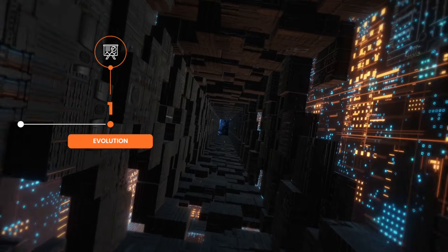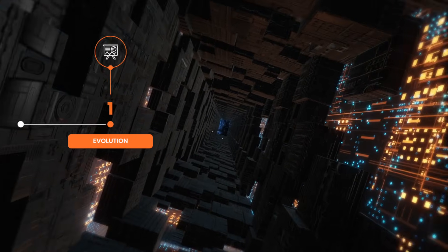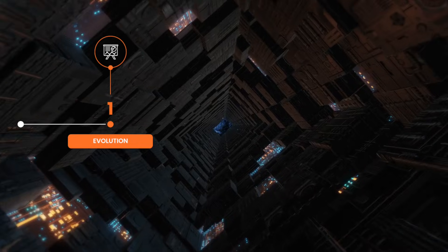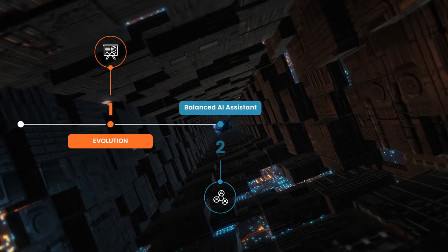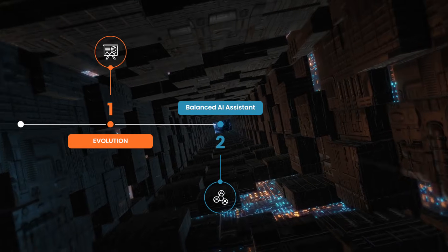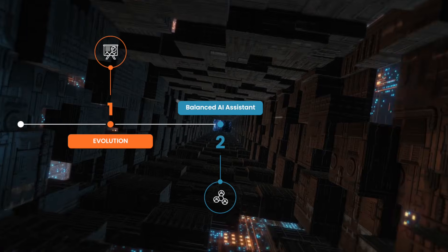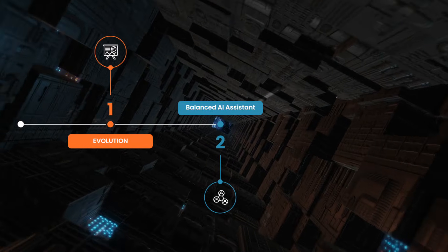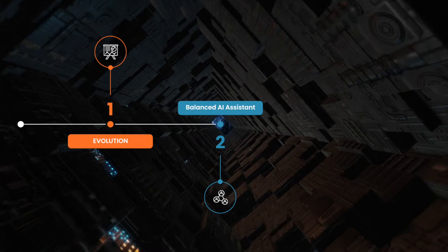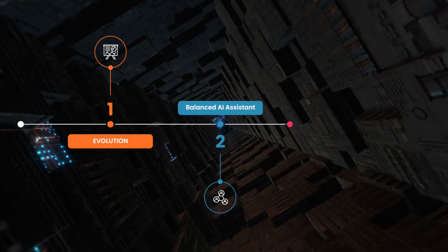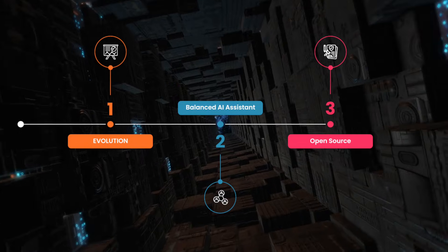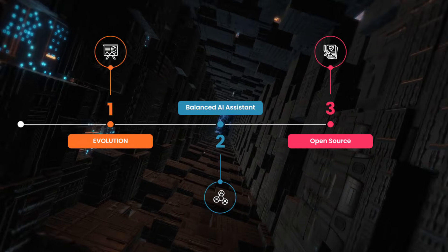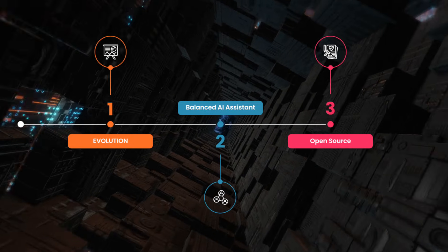One, if DeepSeek continues to evolve, it could push OpenAI and Google to innovate faster and improve their models. Two, users might get a more balanced AI assistant — one that is not just powerful, but also more transparent and accessible. Three, if DeepSeek offers open-source capabilities, it could revolutionize how AI is developed and used globally.